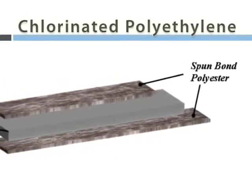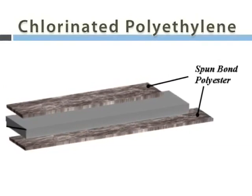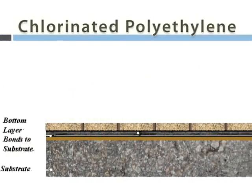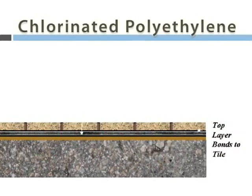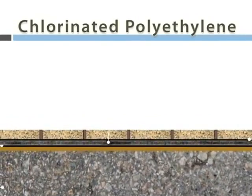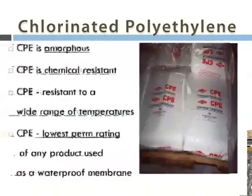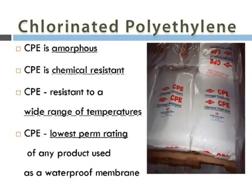Noble CLTS is made from chlorinated polyethylene (CPE) with a non-woven fiber laminated to both sides. The fiber provides a bondable surface so the membrane can be bonded to a substrate, and tile can be bonded to the other side. The CPE membrane in the middle provides elasticity and relieves the stress caused by differences in movement in the tile field and in the substrate below. CPE is impervious and an extremely effective barrier to water and vapor. It is not affected by variations in temperature and is resistant to a broad range of chemicals.